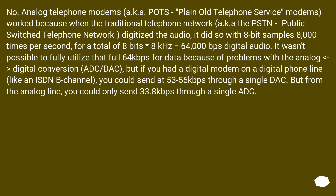It wasn't possible to fully utilize that full 64 kbps for data because of problems with the analog-to-digital conversion (ADC/DAC), but if you had a digital modem on a digital phone line, like an ISDN B channel, you could send at 53 to 56 kbps through a single DAC. But from the analog line, you could only send 33.8 kbps through a single ADC.